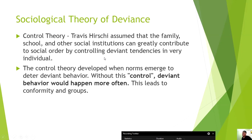Control theory states that in order to prevent or avoid deviant behaviors, they must be controlled by agents of socialization, institutions, and structures — from your family, schools, and other social institutions, especially religion. Control theory developed when norms emerged to deter deviant behavior. Without this control, deviant behavior would happen more often. This leads to conformity within groups — enforced through rewards and punishments.